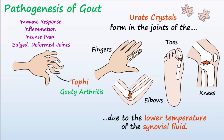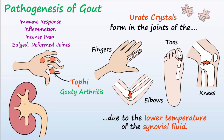Tophi are urate crystalline deposits around the joints and on the surface of the skin. High levels of urate also increase the risk for urate stones forming in the kidney.